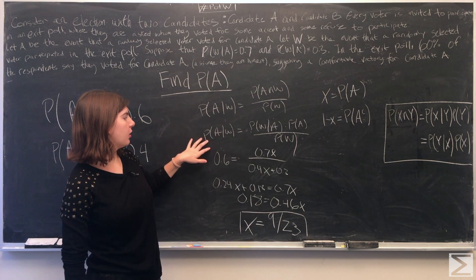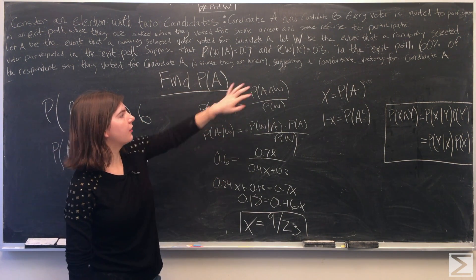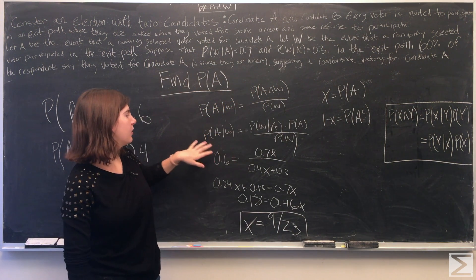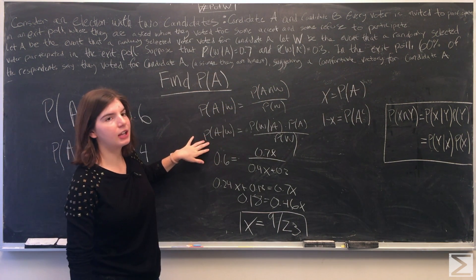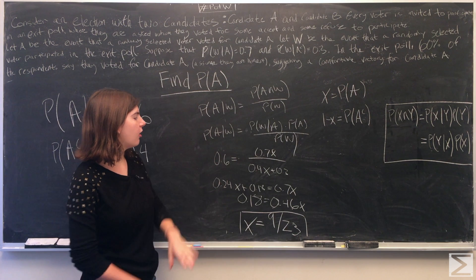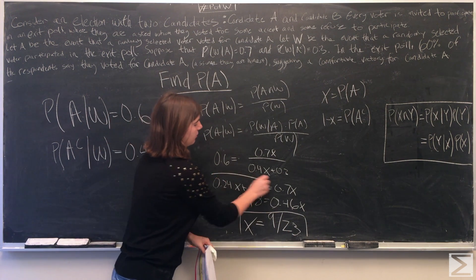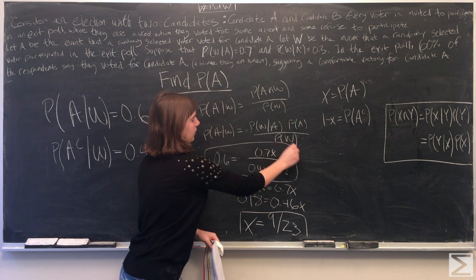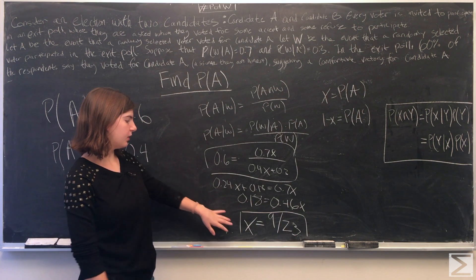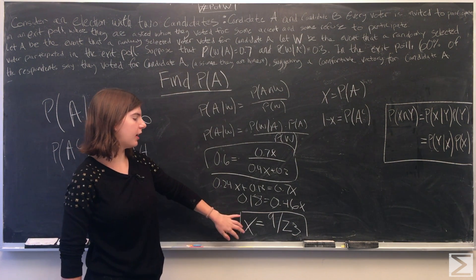And then we also established that that 60% information tells us the probability of A given W. So now all you have is an algebraic equation, and you can solve for X. And you're left with X is equal to 9/23.